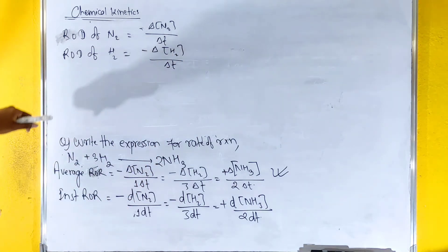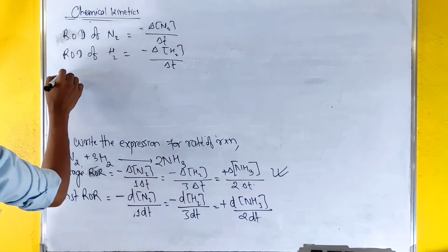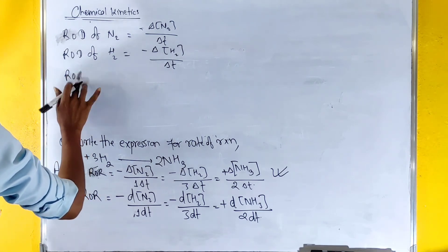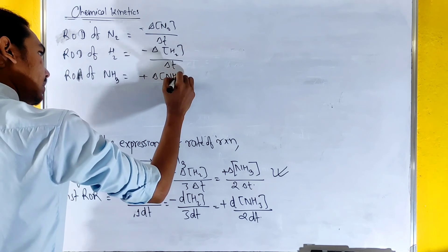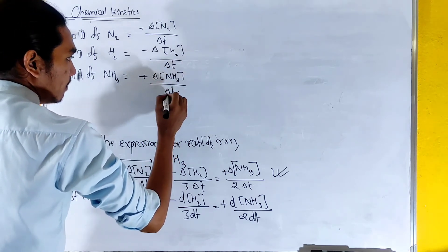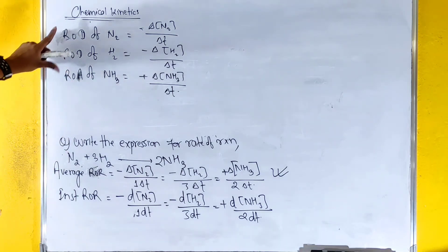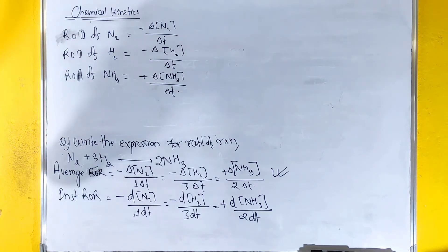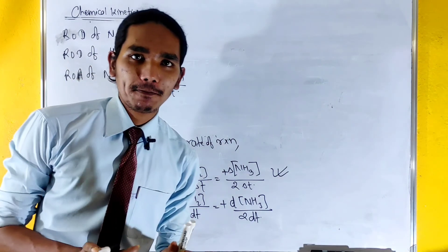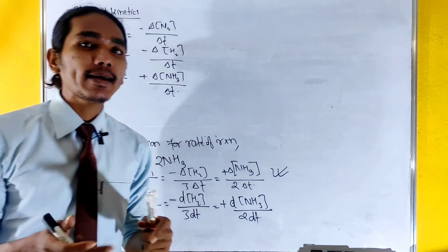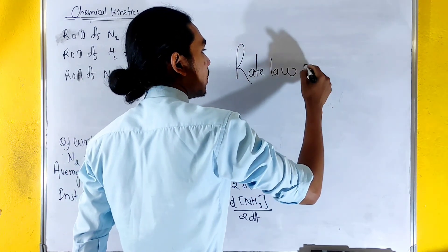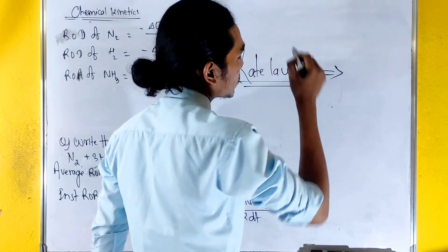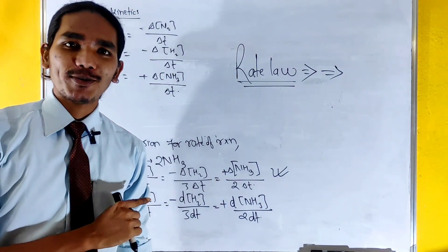The rate of appearance of NH₃ is: plus (delta NH₃) / (delta T). This covers our discussion of the rate of reactions. In the next video, we will discuss more problems related to this topic.